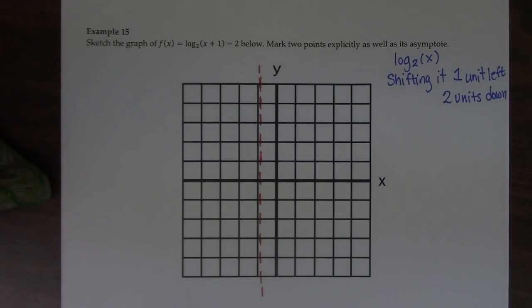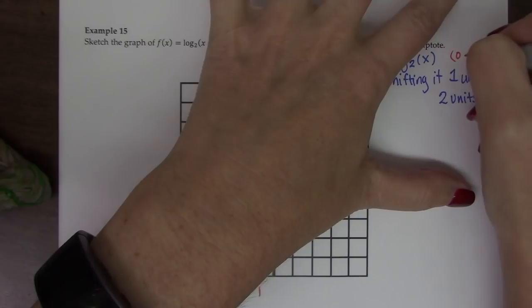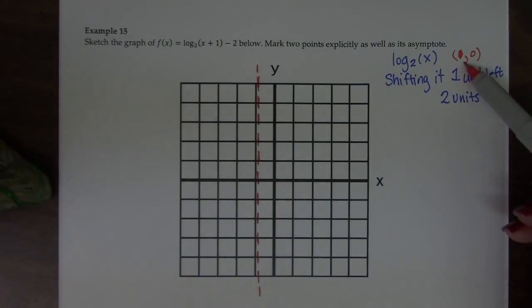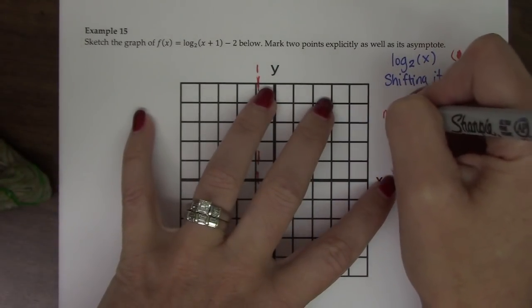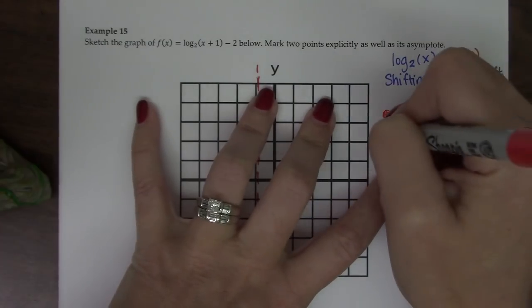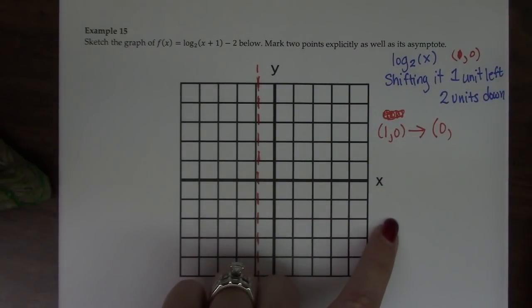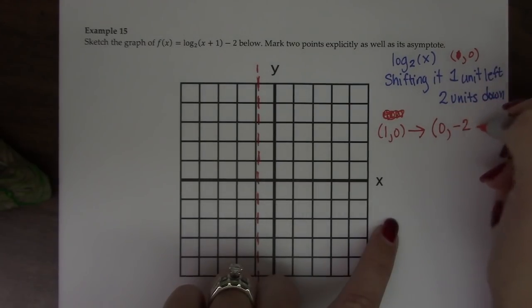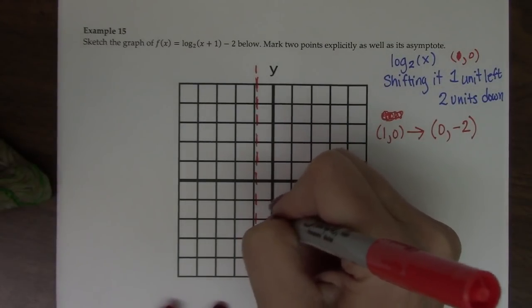Then we know that log of 1 is 0, so the point 1, 0 is on this graph. Well, if the whole graph is shifted to the left one, then if I shift 1, 0 over 1 point, it should be through the origin. But then it's also shifted down 2. So the new point: 1, 0 moves one unit left, so its new x coordinate is 0, but it moves two units down, so its new y coordinate is negative 2. So if I go to 0, negative 2, that point is right here.